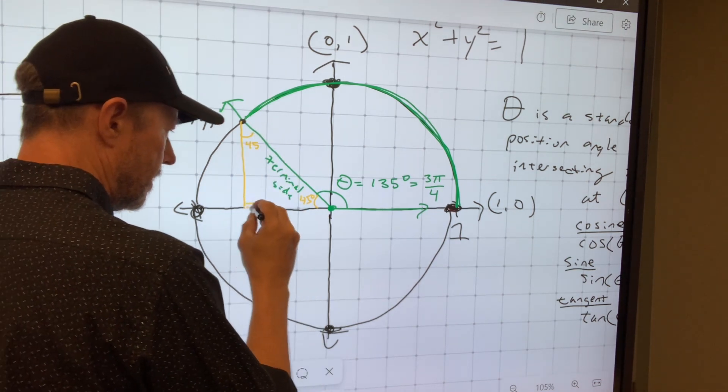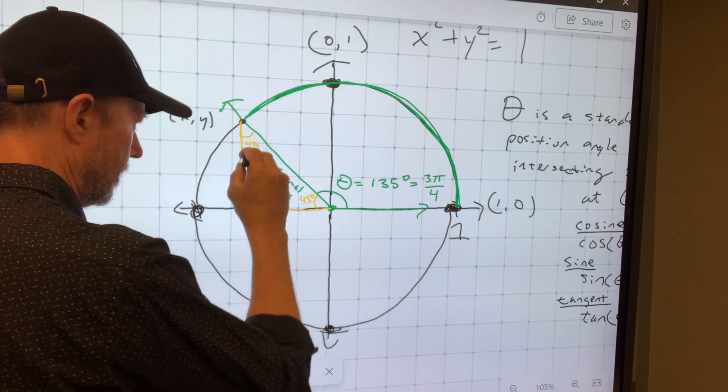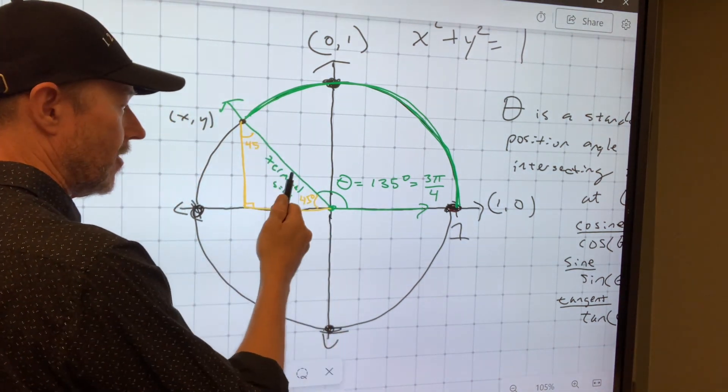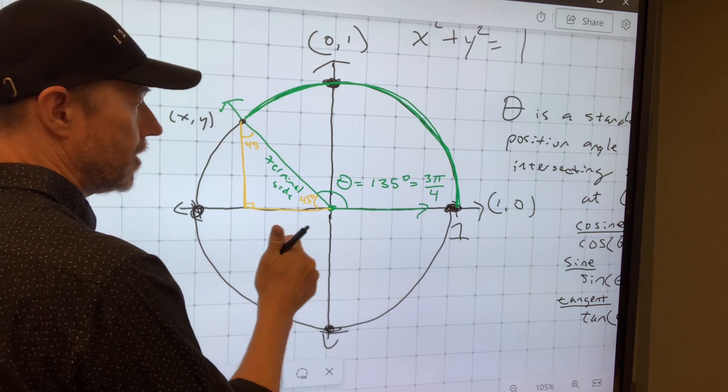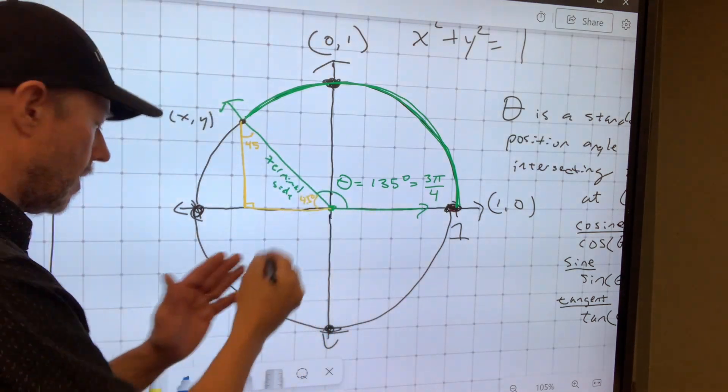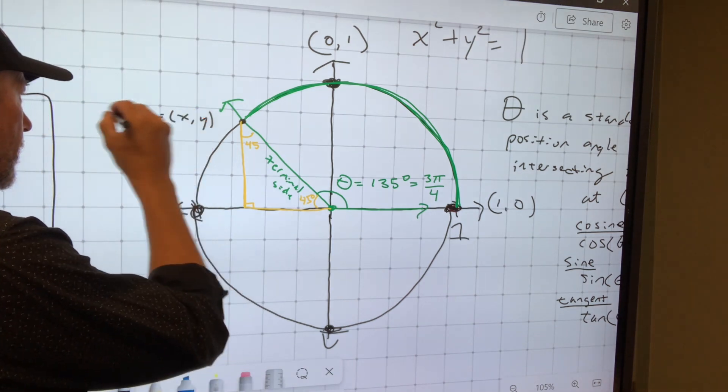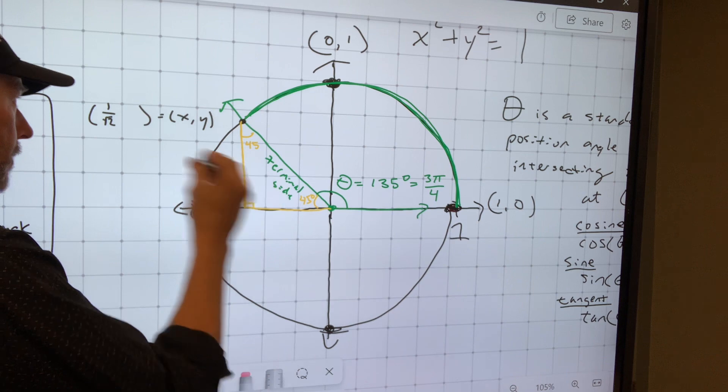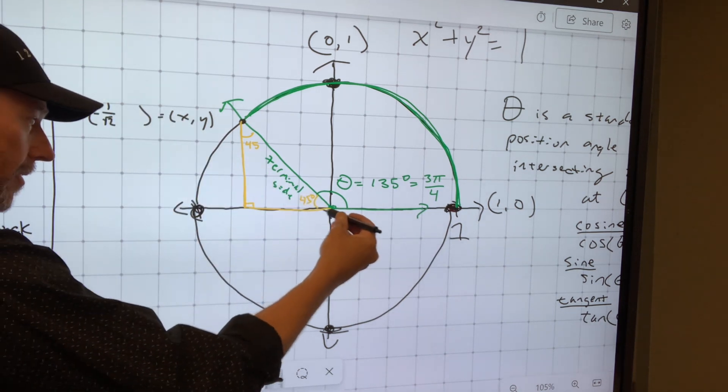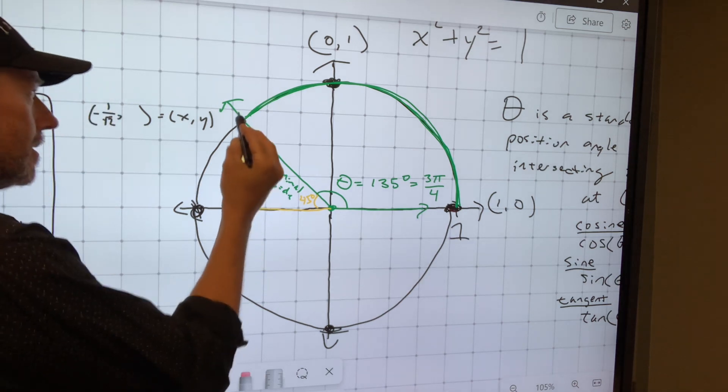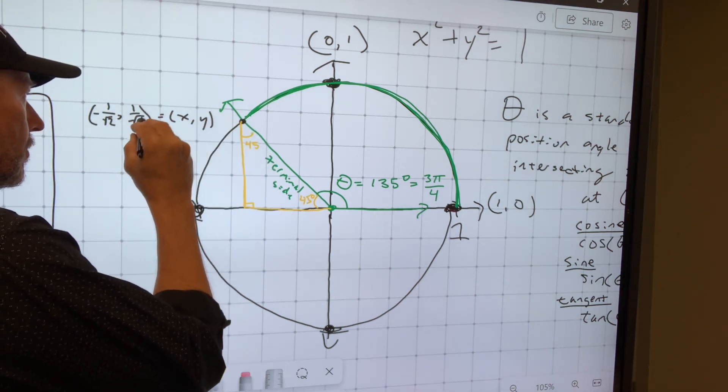So that means that this distance and this distance are the same length. And we're in a 45-45-90. So they're square root of two times smaller than the radius. The radius is one. If the radius is one, then this coordinate right here is one over the square root of two because this, but it's negative because we're going to the left. But this distance here is square root of two times smaller than one. And this distance here is the same. So there's your coordinates.